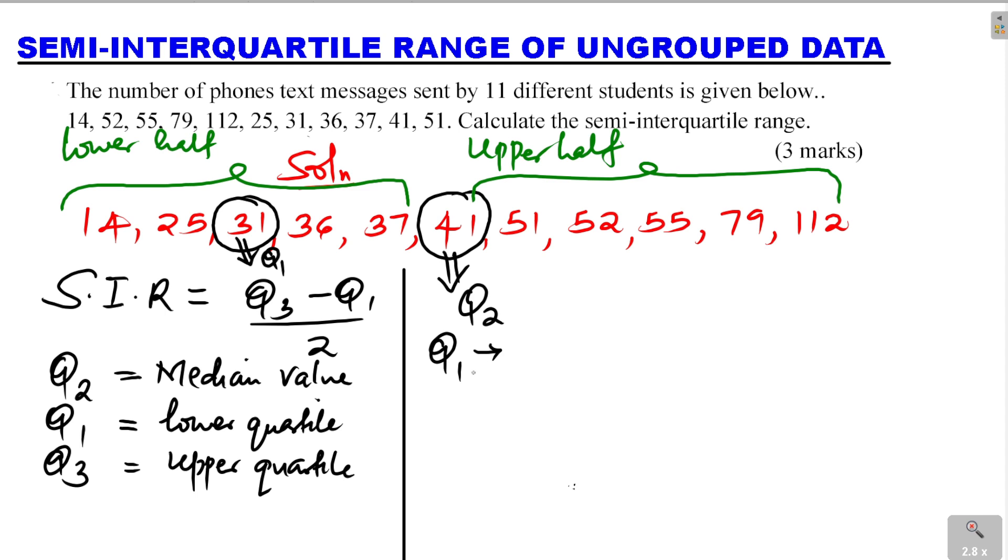Q3 will be the median of the upper half. You can identify the median of the upper half: it is 55. So Q3 is 55.